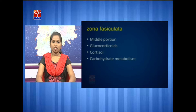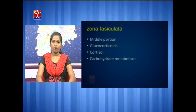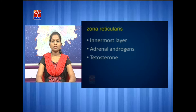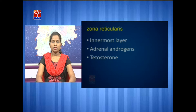Zona fasciculata is the middle portion of the adrenal cortex, where the cells are arranged perpendicular to the surface and secrete glucocorticoids called cortisols, which are involved in carbohydrate metabolism. Zona reticularis is the innermost layer of the adrenal cortex, and the cells of this layer are very large compared to the other two regions. These cells secrete hormones called sterocorticoids or steroid hormones like testosterone.